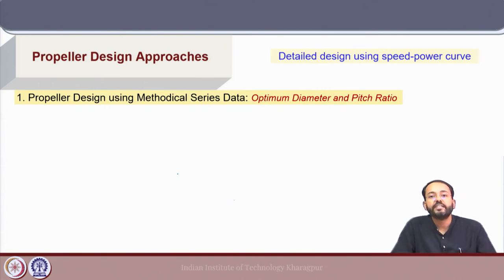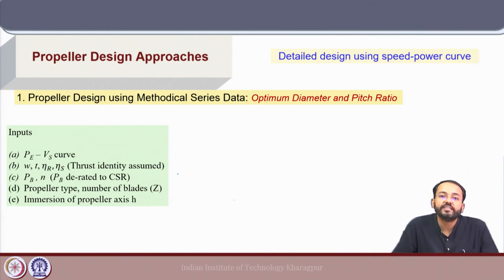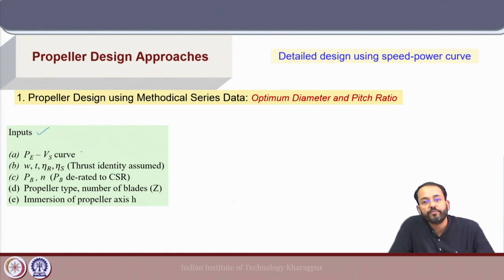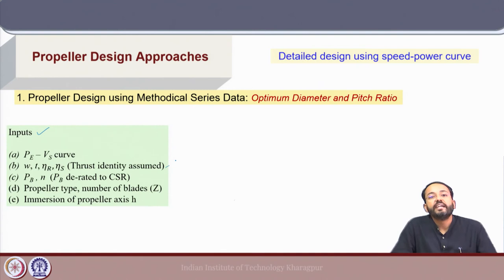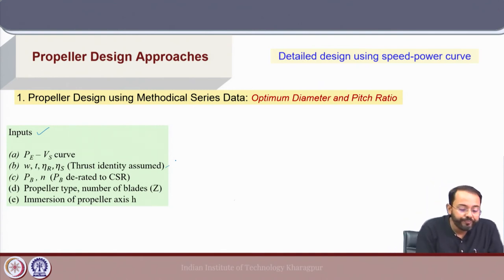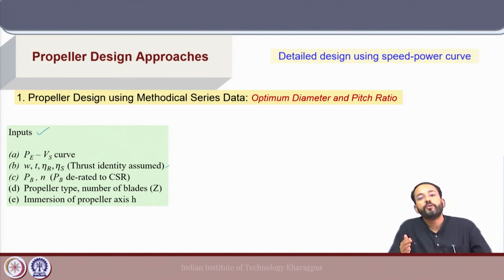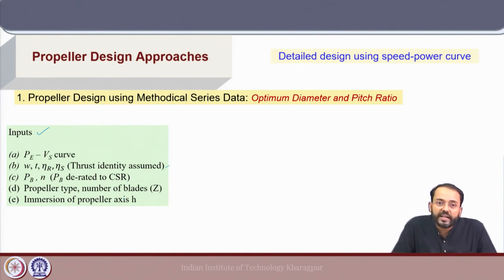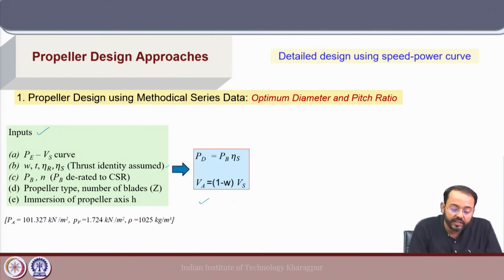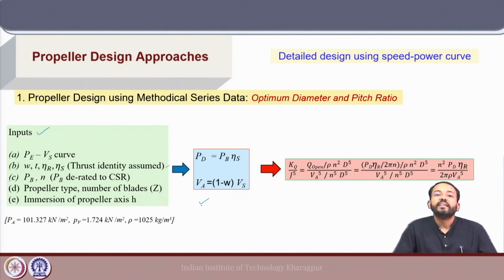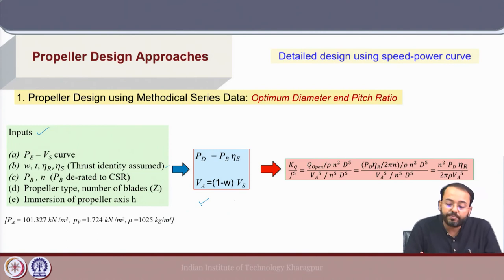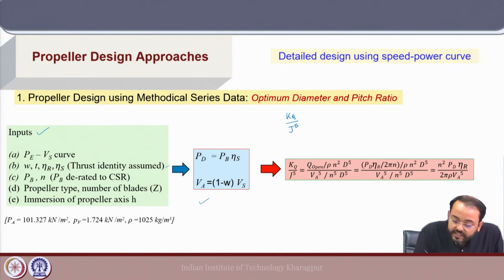For the detailed propeller design procedure using methodical series data, a series of input parameters are used: the effective power versus speed curve for the ship, hull-propeller interaction coefficients, engine power derated to continuous service rating RPM, propeller type, number of blades, and the immersion of the propeller axis h (important for cavitation criteria). We calculate the delivered power and advance speed, then compute the expression Kq/J⁵.